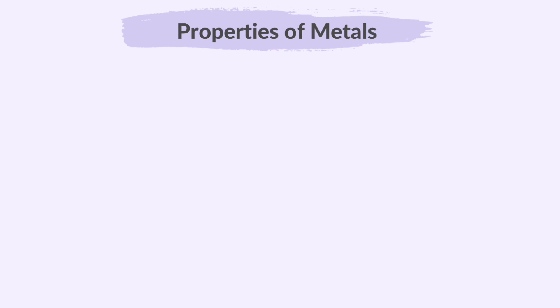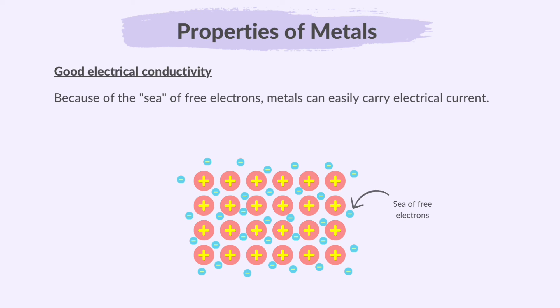What are the properties of metals? Metals have good electrical conductivity. Because of the sea of free electrons, metals can easily carry electrical current. These free electrons can move throughout the metal lattice and act as conductors of electricity.